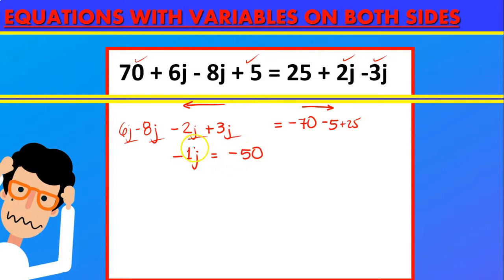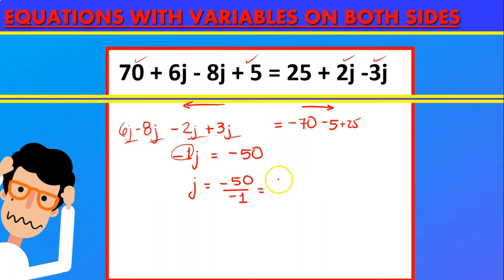So minus 1j is equal to, and on the right side we have minus 17 minus 5 plus 25, which gives us minus 15. Because we have minus 1 multiplying the j and we want j alone, we divide by minus 1. Negative divided by negative 1 is going to be positive, and the answer is going to be 15.